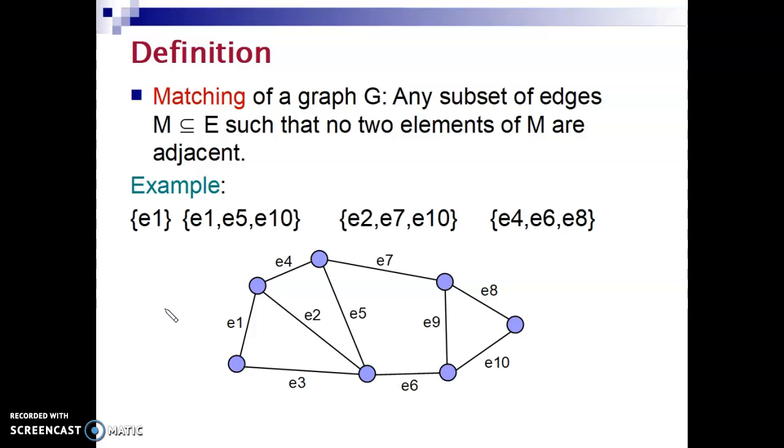So what does that mean? Here's an example. We have a graph of one, two, three, four, five, six, seven nodes. And all of these edges are numbered from E1 to E10.